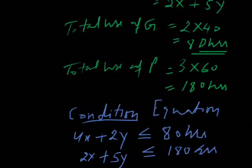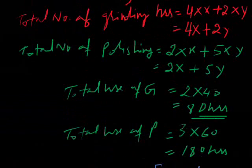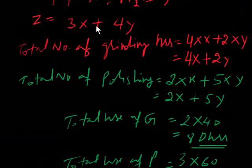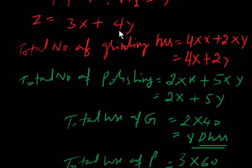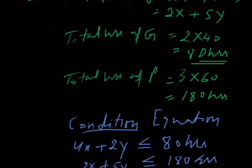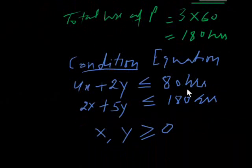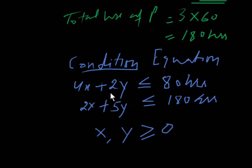So the objective function is Z equals 3X plus 4Y. The constraints are: 4X plus 2Y less than or equal to 80 hours, and 2X plus 5Y less than or equal to 180 hours, along with the non-negativity condition X, Y ≥ 0.